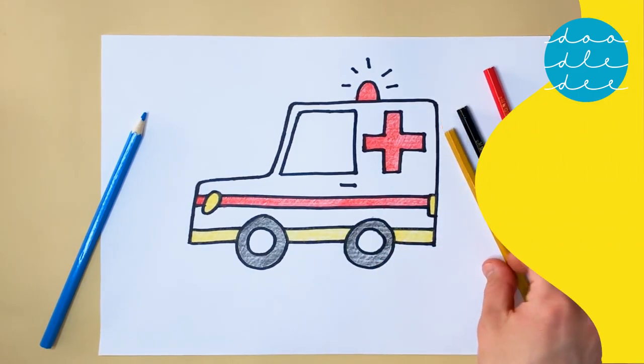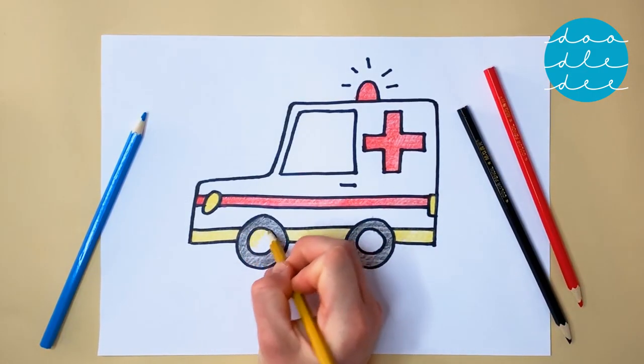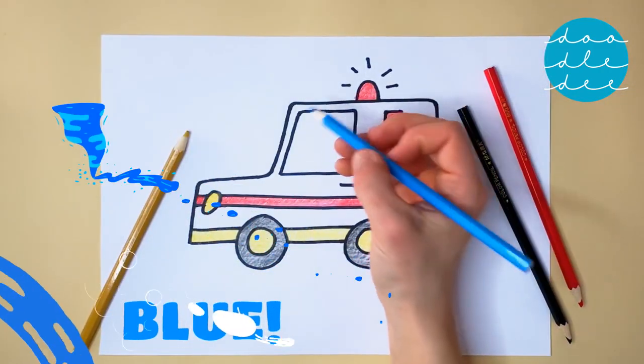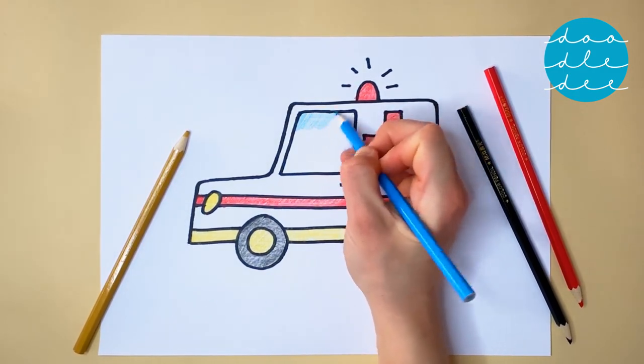And then yellow again for inside the wheels. The last color is blue. Blue for the window.